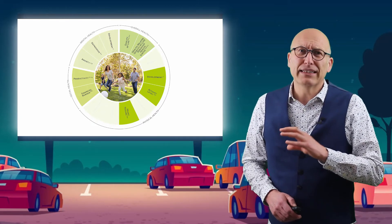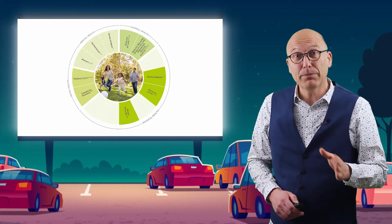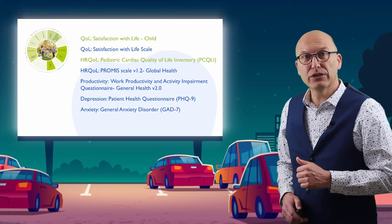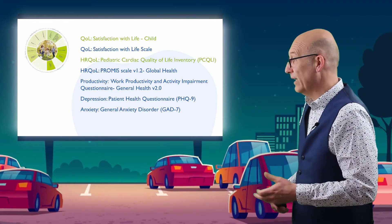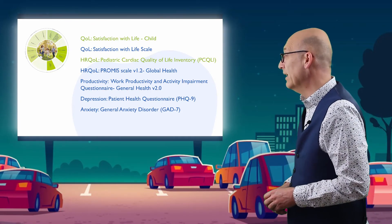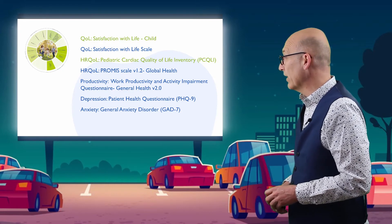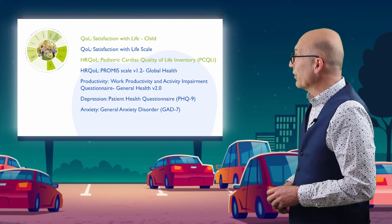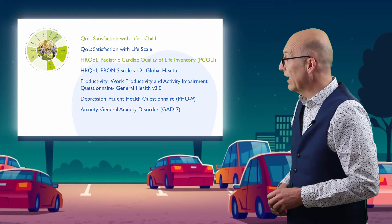For most of these outcomes it is not indicated which questionnaire you should choose, except for a few. The proposals for questionnaires for children are given in green, for adults in blue. Quality of life is recommended to be measured using the Satisfaction with Life Scale, both in children and adults. Health-related quality of life can be measured in children using the Pediatric Cardiac Quality of Life Inventory, and in adults using the PROMIS General Health Scale. For productivity, the Work Productivity and Activity Impairment Questionnaire general health version 2 is recommended. Depression can be measured using the Patient Health Questionnaire, and anxiety using the Generalized Anxiety Disorder questionnaire.